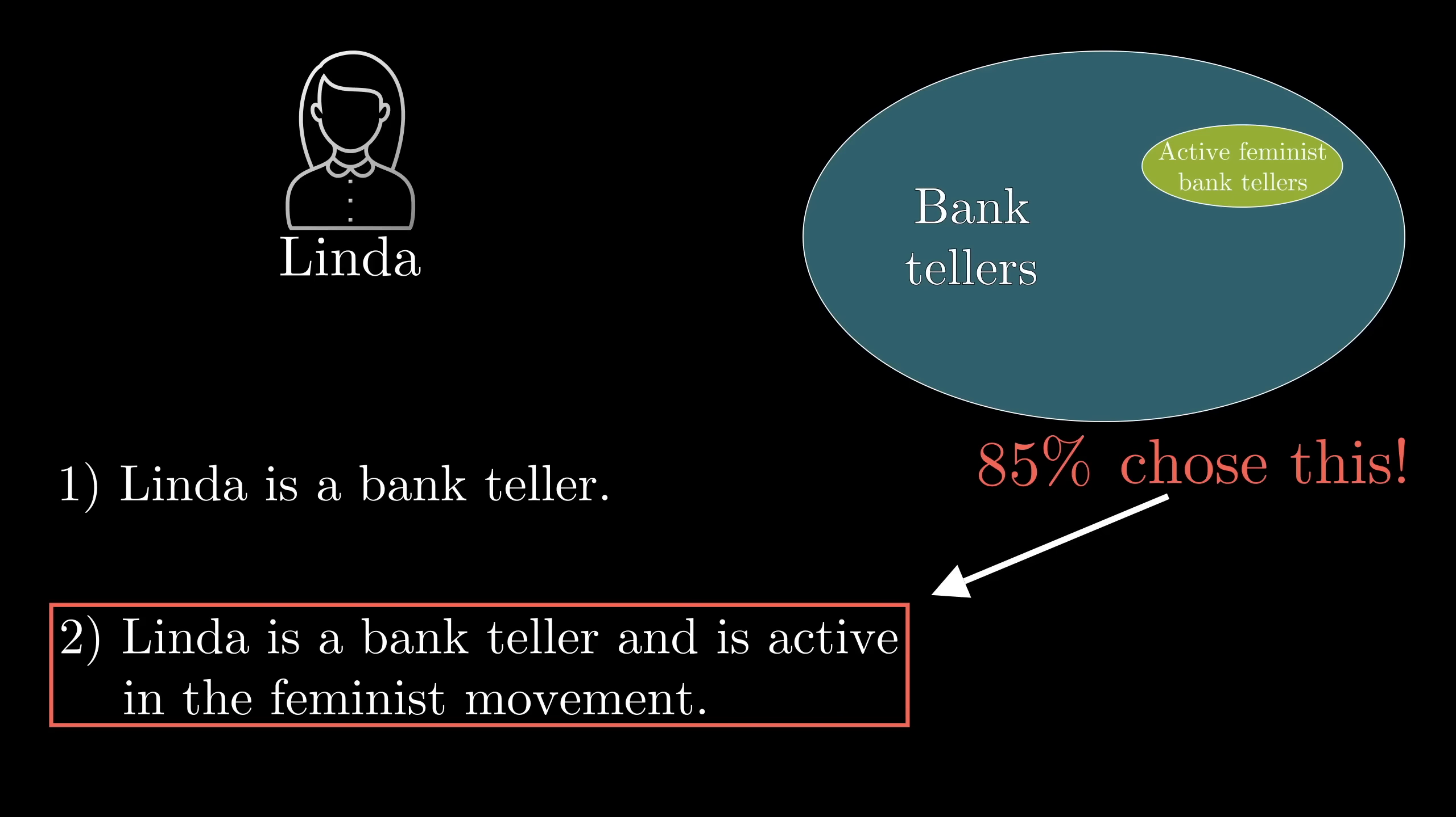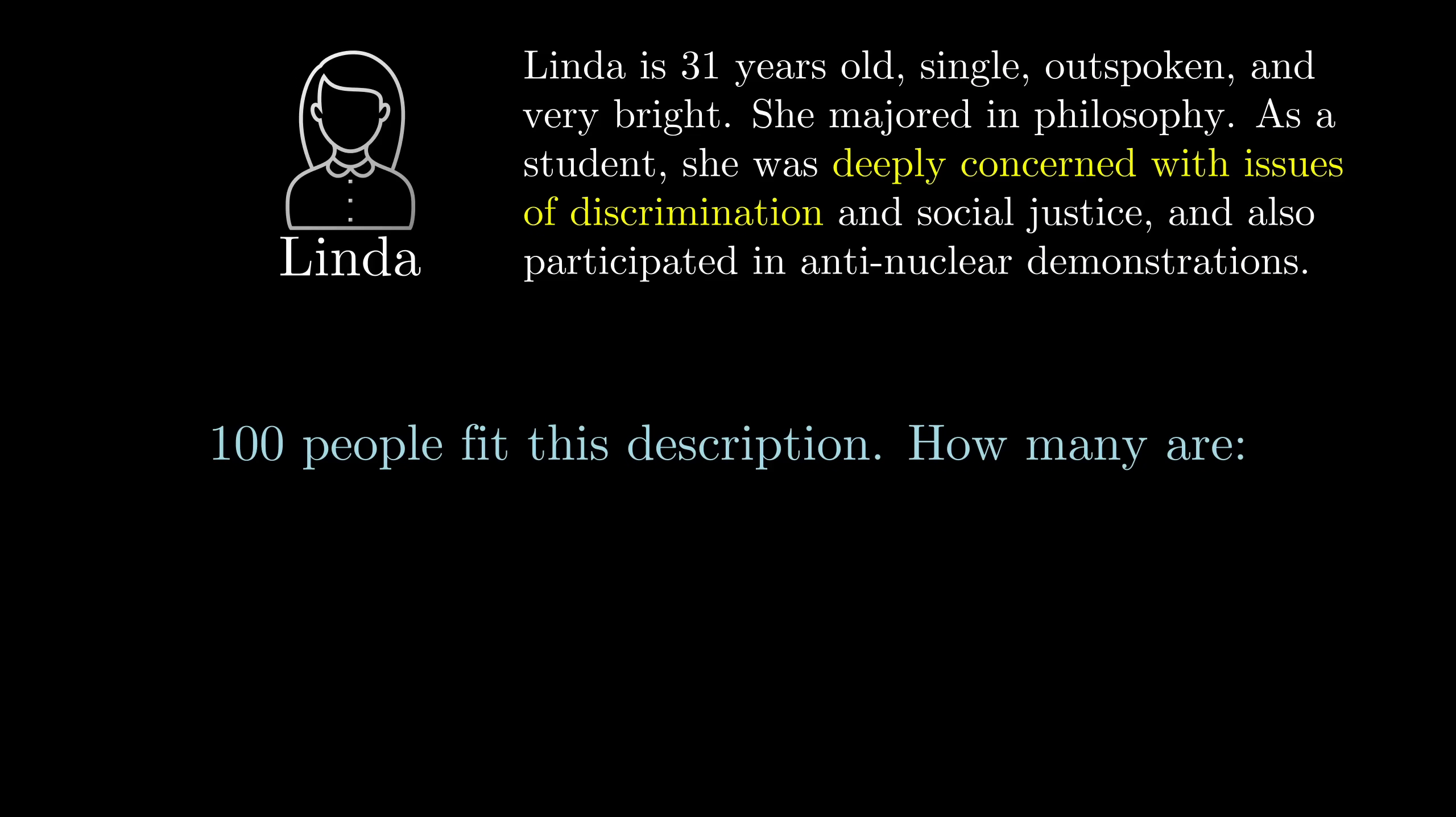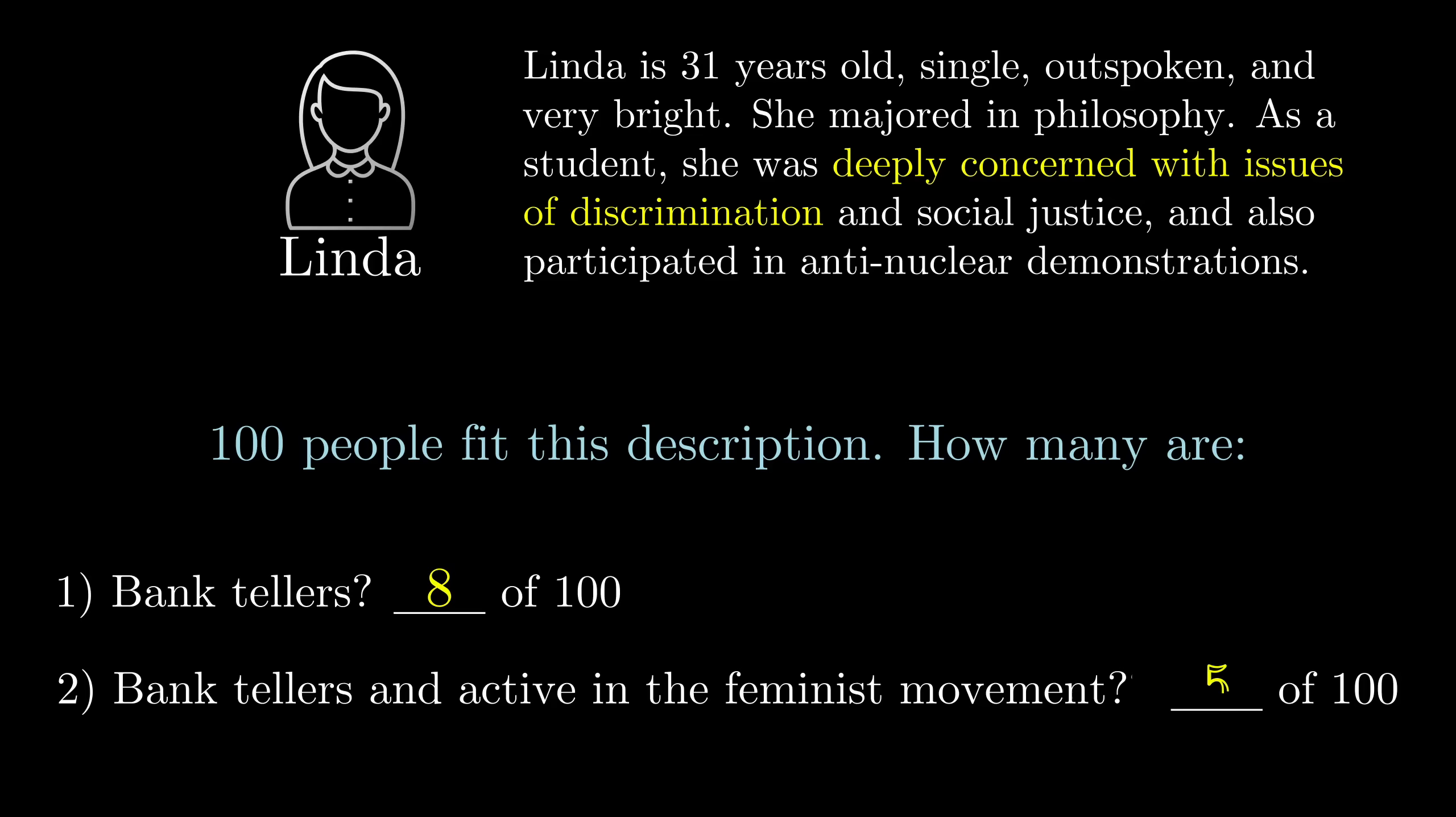So that's interesting enough, but what's fascinating is that there's a simple way that you can rephrase the question that dropped this error from 85% to zero. Instead, if participants were told that there are 100 people who fit this description and then they're asked to estimate how many of those 100 are bank tellers and how many of them are bank tellers who are active in the feminist movement, nobody makes the error. Everybody correctly assigns a higher number to the first option than to the second.